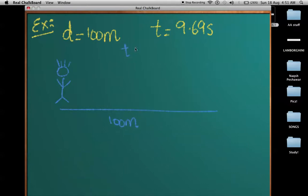Now what are they asking? They are asking us what was his average speed. This is the original point, this is the final point. So we know the change in distance that he had covered, which was 100 meters.